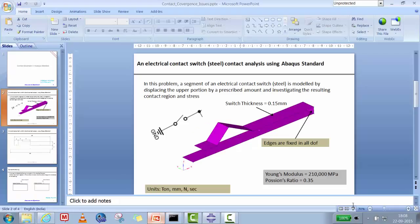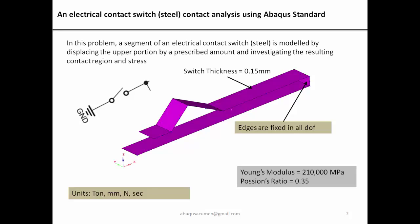This problem is a segment of an electrical contact switch — a steel body. On the upper body we are going to give a prescribed displacement, since this is an on/off switch: 1.5 mm downward so the upper part moves down and contacts the bottom flat surface. The two edges will be fixed in all degrees of freedom (encastre). The material property is linear elastic: Young's modulus 210 × 10³ MPa and Poisson's ratio 0.3. The units used are ton, millimeter, Newton, and second.